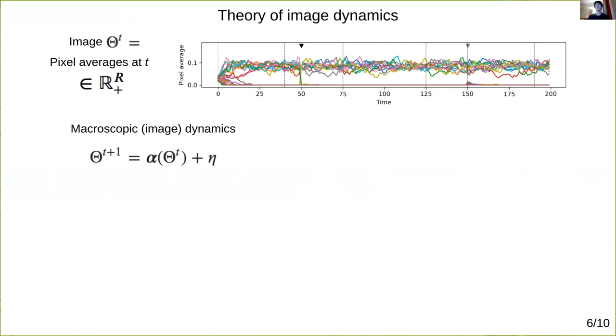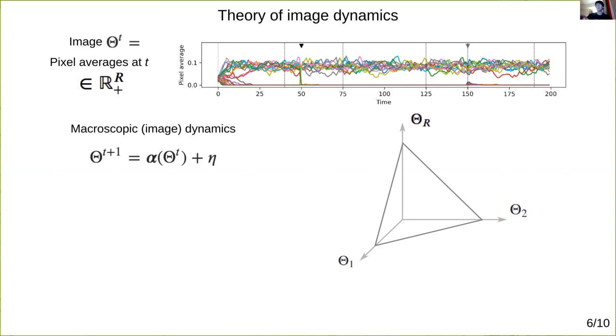Although the system is deterministic, we can approximate the image dynamics via a noisy map, where theta t plus one is given by a function alpha of theta t plus some noise. So theta is a vector wandering around in an r dimensional space where different points in this space correspond to different images.